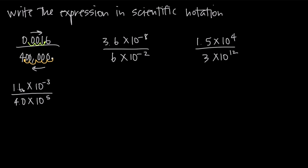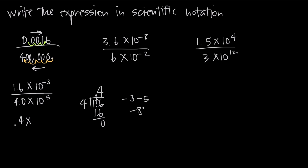We do the whole numbers and decimals together: 1.6 divided by 4. 4 doesn't go into 1, but 4 goes into 16 four times, so we get 0.4. Then for the powers of 10: 10 to the negative 3 divided by 10 to the 5. When you have like bases, you subtract the exponents — negative 3 minus 5 gives us negative 8. So we have 0.4 times 10 to the negative 8.